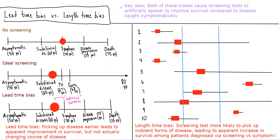One key idea I want to start with is that both of these biases pertain to screening tests, and basically both of them will artificially appear to improve survival compared to disease that's caught symptomatically. So they both make it appear as though we're catching these people through screening tests and they're living a lot longer than people who are caught through their symptoms. These are just two biases you always have to consider when somebody is making that claim, and really vet out their claims to make sure these two things aren't going on.